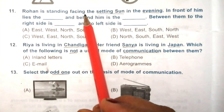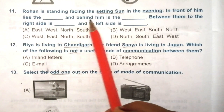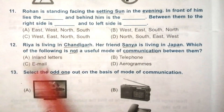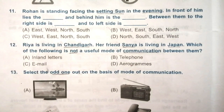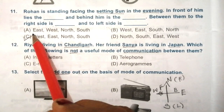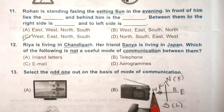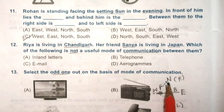Question 11: Rohan is standing facing the setting sun in the evening. In front of him lies the dash, and behind him is the dash. To the right side is dash, and to the left side is dash. The answer is C. We know the sun sets in the west direction. Rohan is facing the setting sun, so in front of him is west, behind him is east, to his right is north, and to his left is south.